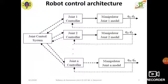For example, for joint 1, the position, velocity, and acceleration are represented as q1, q1-dot, and q1-dot-dot. For joint 2, position, velocity, and acceleration are represented as q2, q2-dot, and q2-dot-dot. Similarly, for n joints, the corresponding position, velocity, and acceleration set points are generated by the master control system. Based on these set points, the manipulators for joint 1, joint 2, up to joint n are modeled, and the required end effector task is performed.